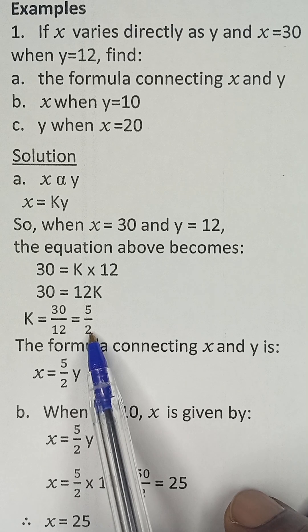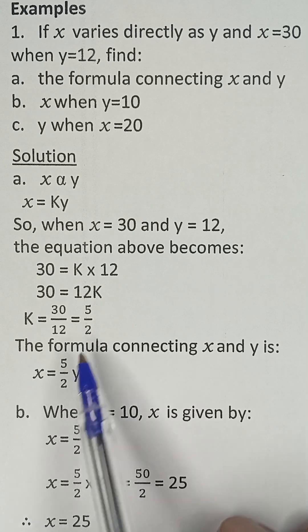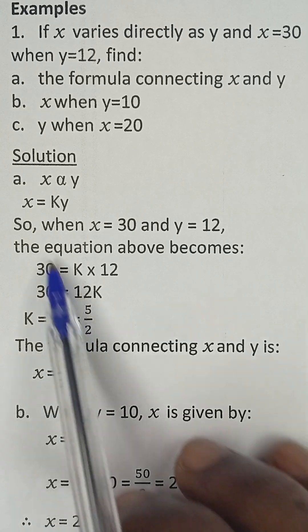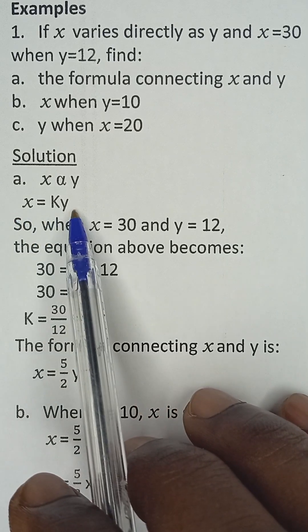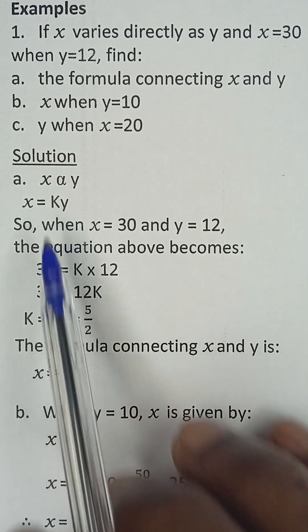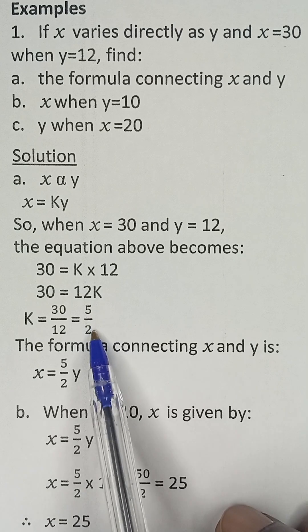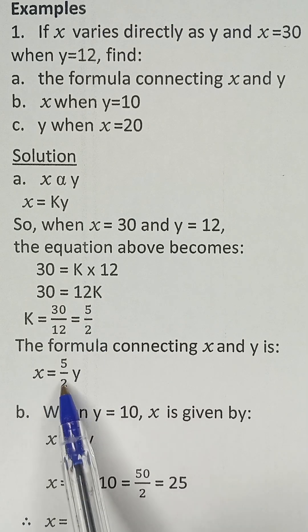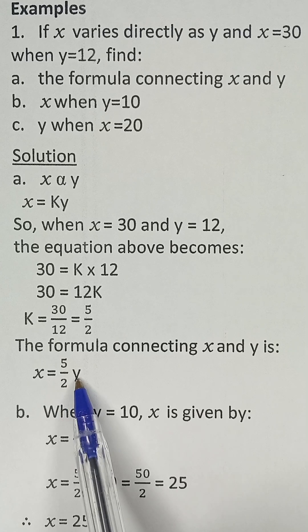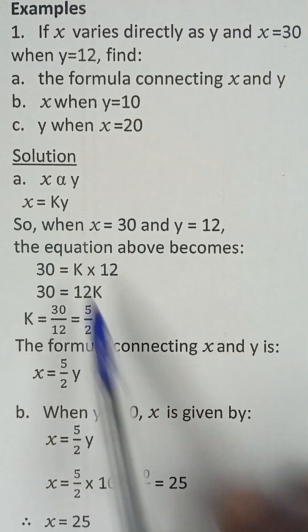So for us to get the formula connecting X and Y, we go back to this equation where we have X equals KY. And then where we see K, we substitute the value of K, which is 5 over 2. So that will give us X is equal to K, which is 5 over 2 multiplied by Y as expressed here.